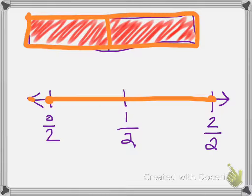If I were to cut my one whole line into two parts, I then have one part out of two if I had this first section right here, and then two parts out of two if I had both parts right here.